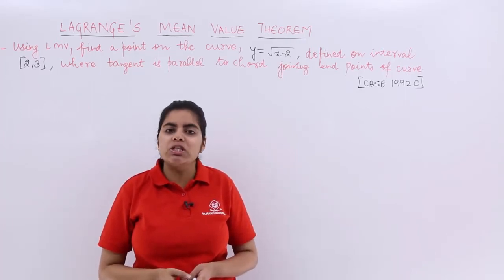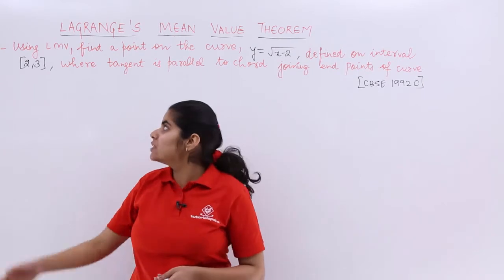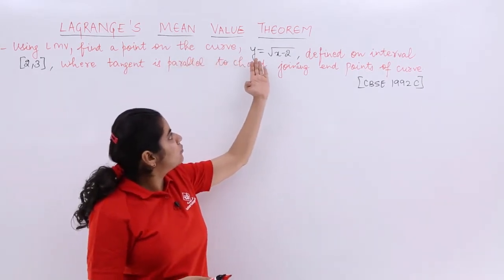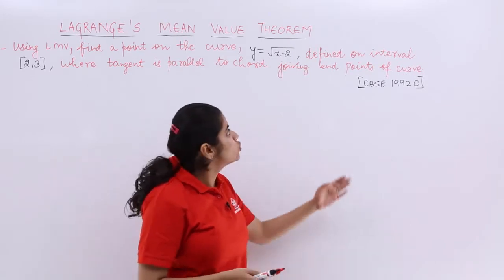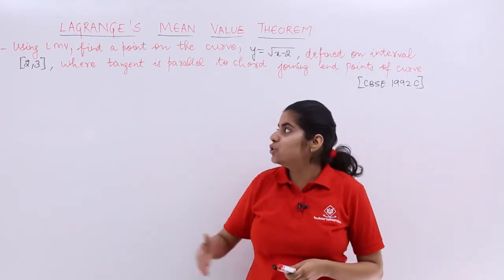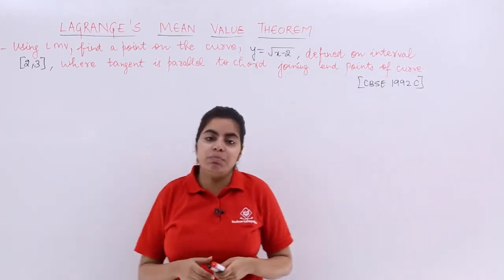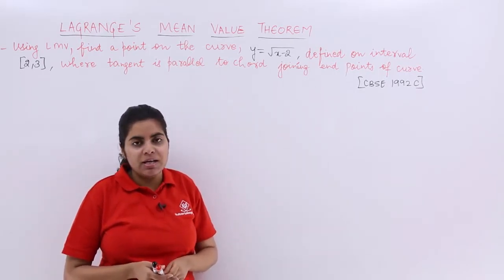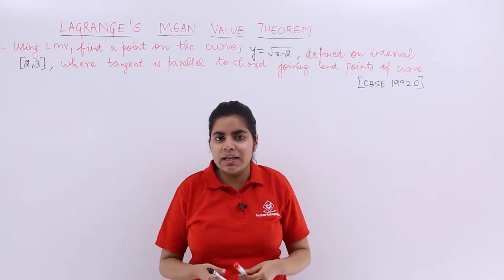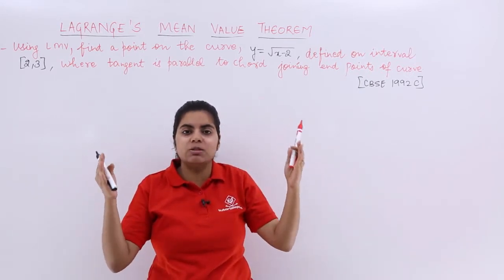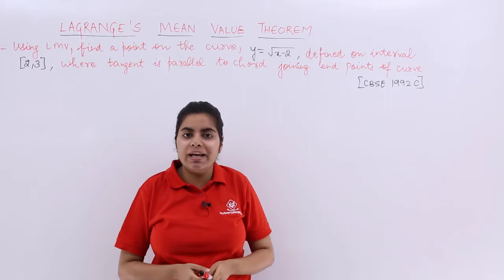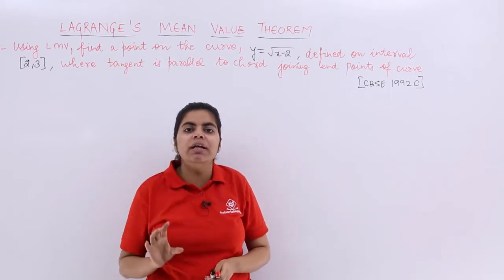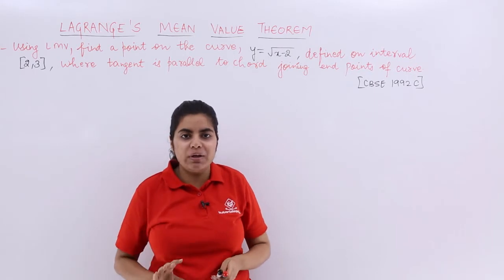Let's see the next numerical problem based on LMV. The question says: using Lagrange's Mean Value Theorem, find a point on the curve y = √(x−2), defined on the interval [2, 3], where the tangent is parallel to the chord joining the endpoints of the curve. The second line of the question is very important — it is talking about the geometrical interpretation of LMV, which we have already studied.